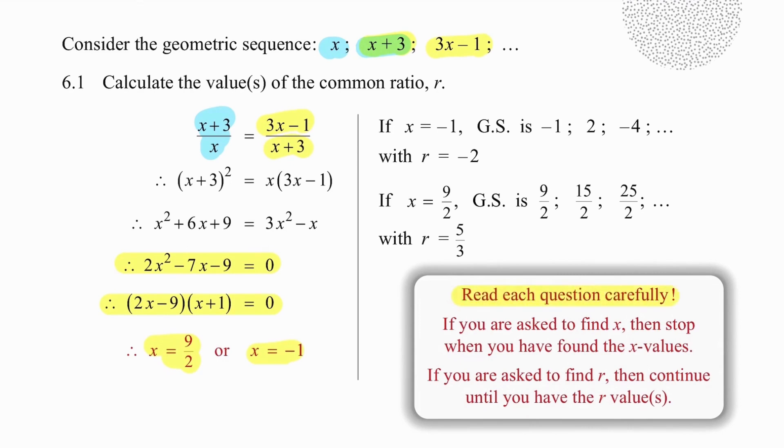Read the question carefully. If they're asking you to find x, then I've completed the question and I need to do no more work. However, they are asking us to find the common ratio. So in this question, we have to continue because we haven't actually answered the question yet. So if we take x equal to minus 1 and generate the sequence by replacing the x values with minus 1, the sequence we get will be minus 1, 2, minus 4. And from there, we can work out that our ratio is minus 2.